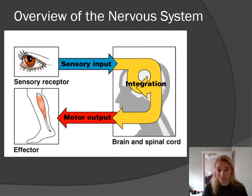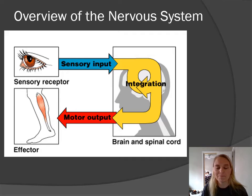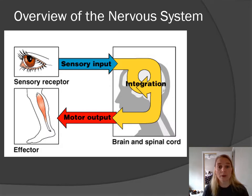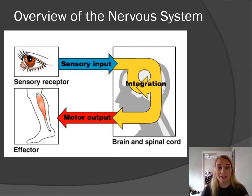So that's basically the nervous system. There's a lot more detail to it than that. Think sensory input — you're receiving information from the world around us, we're processing and integrating that, and then making decisions consciously and subconsciously what to do with that information, and then sending out those commands to things in your body that can do stuff. And that's what we call effectors.